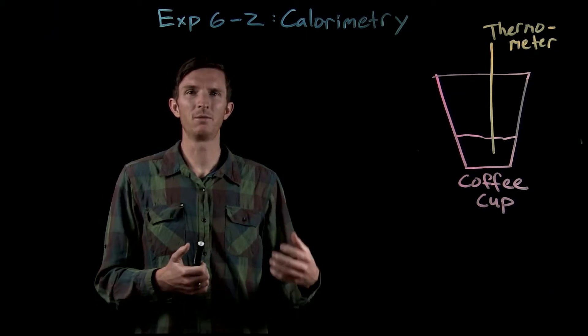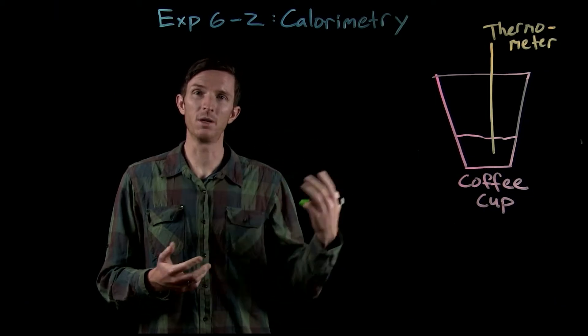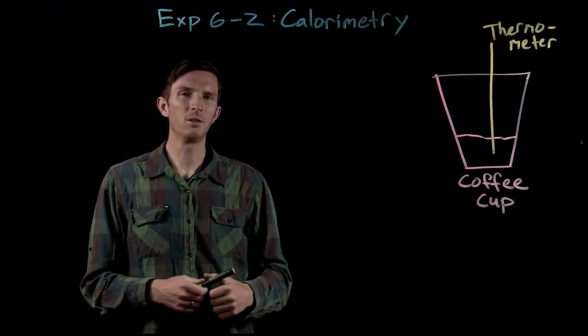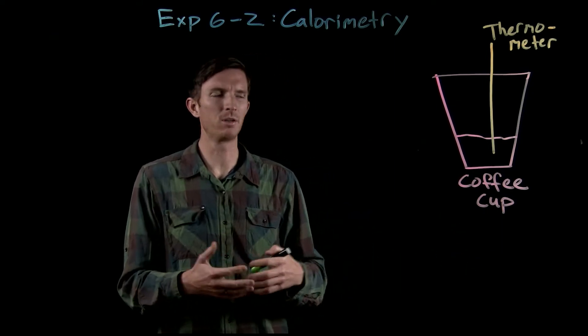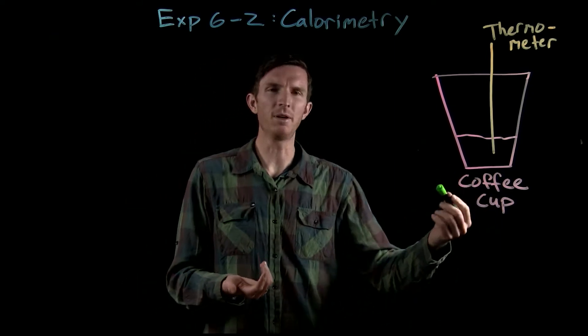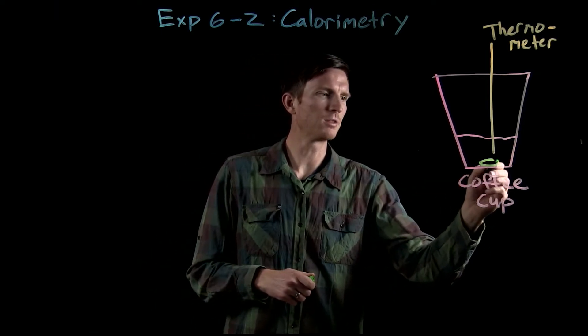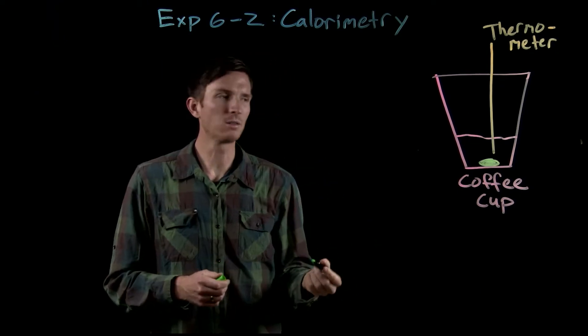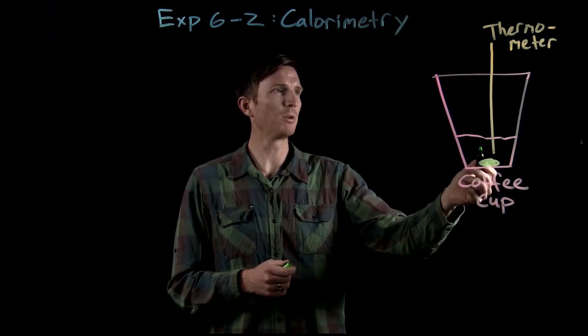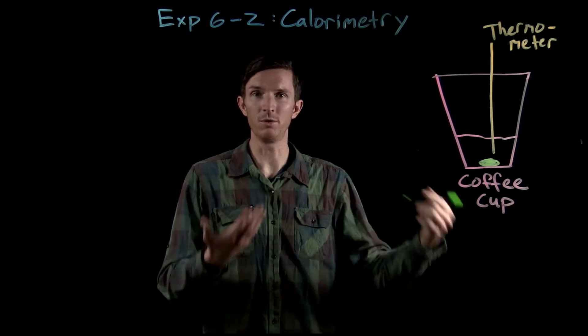Now there's various different steps or processes that we can do when we're looking at these reactions, and we're going to complete these reactions in a coffee cup calorimeter. A coffee cup calorimeter is very simple. We have a coffee cup, we're going to put a thermometer in there. Then we'll put a stir bar in here, and that's going to make it so that our solution is well mixed, and that means that whatever temperature our thermometer is measuring is hopefully the temperature of the whole solution.